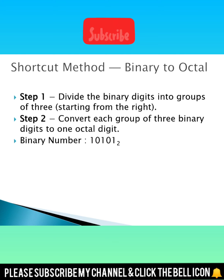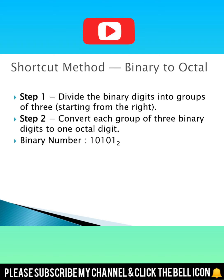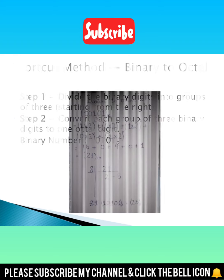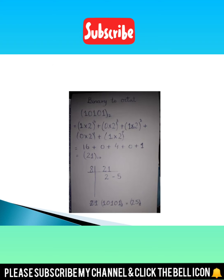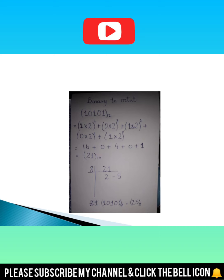The shortcut method for binary to octal: divide the binary digits into groups of three starting from the right, then convert each group of three binary digits to one octal digit. This way we can convert binary directly to octal.